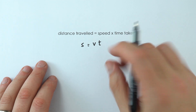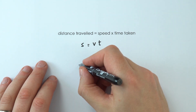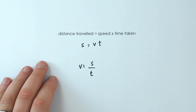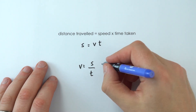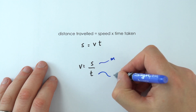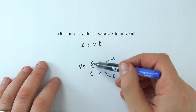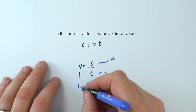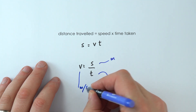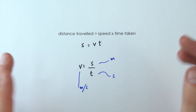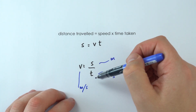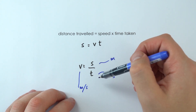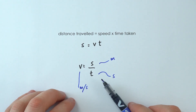A better way of thinking about this equation is that speed is equal to the distance traveled divided by the time taken. The reason that's useful is because distance is measured in meters and time is measured in seconds, which gives us speed in meters per second — the amount of distance traveled per unit time. However, in everyday life we tend to talk about kilometers per hour or miles per hour, so all of these things are just the rate at which a distance is changing.